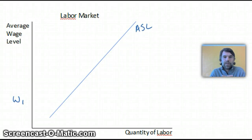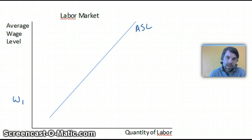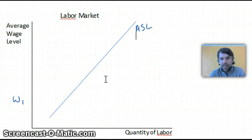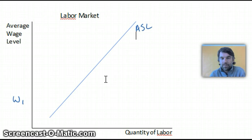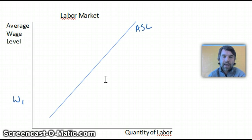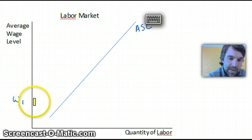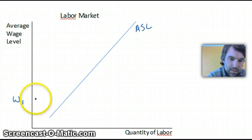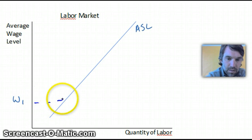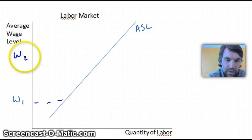Hi guys, I'm going to introduce you to a new diagram today — the diagram for the labor market. It looks just like a supply curve, and that's because it is. ASL stands for Aggregate Supply of Labor. Our axes are quantity and average wage level, and what the curve represents is that at higher wages, people are more willing to work.